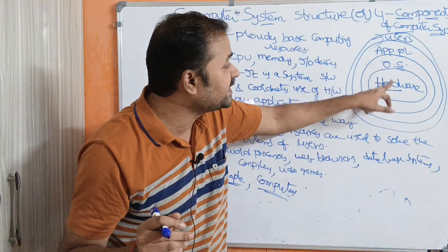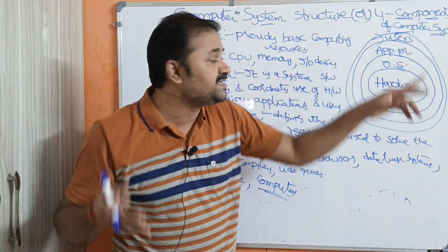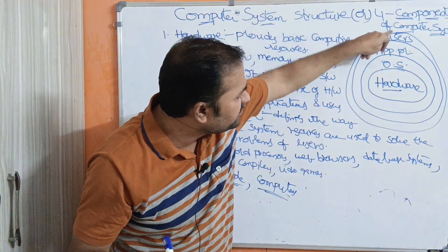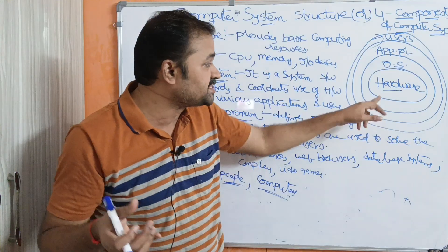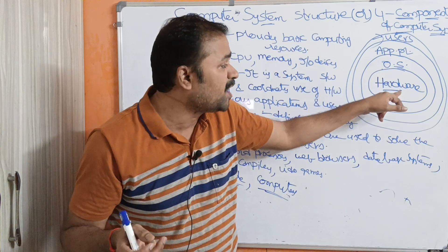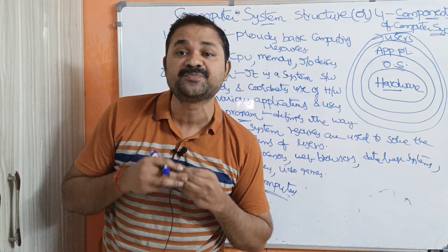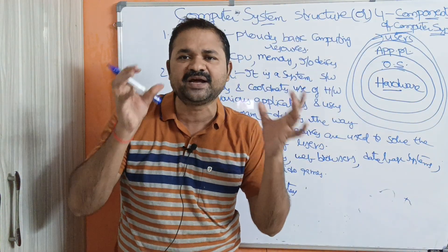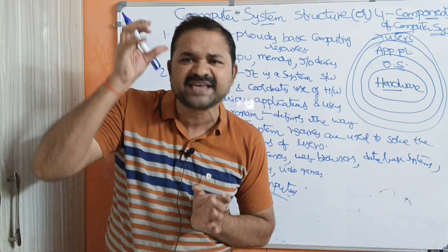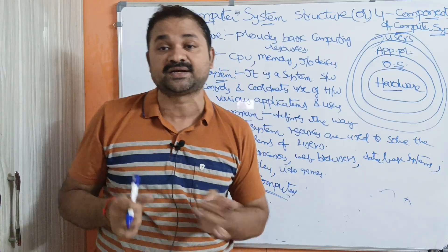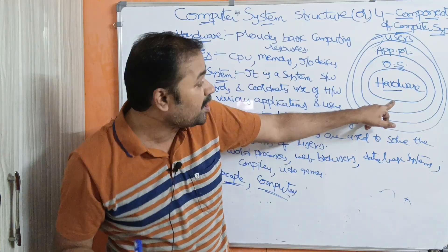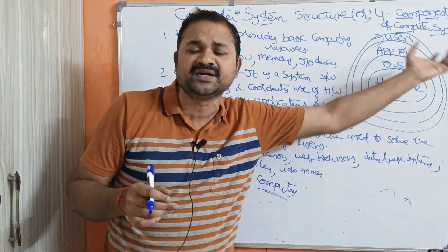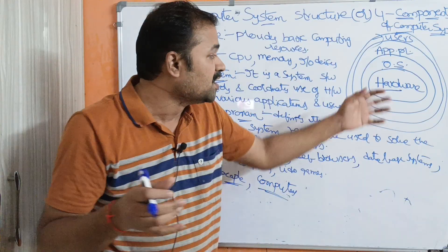We should say operating system is an interface between user and computer hardware. We should not say it is an interface between application program and hardware, because what the application program is doing is solving the problems of users. The operating system accepts the resources provided by the hardware and provides those resources to the application programs — it allocates computer resources to the application program.